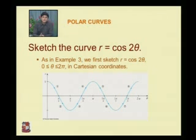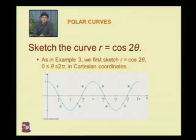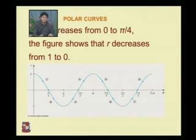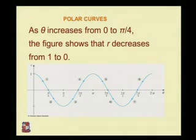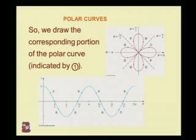This curve is called a cardioid because it is shaped like a heart. Third example: sketch the curve r = cos2θ. First, symmetry: there is no change in equation if theta is replaced by minus theta, so the curve is symmetric about the initial line. As theta increases from 0 to pi/4, r decreases from 1 to 0.